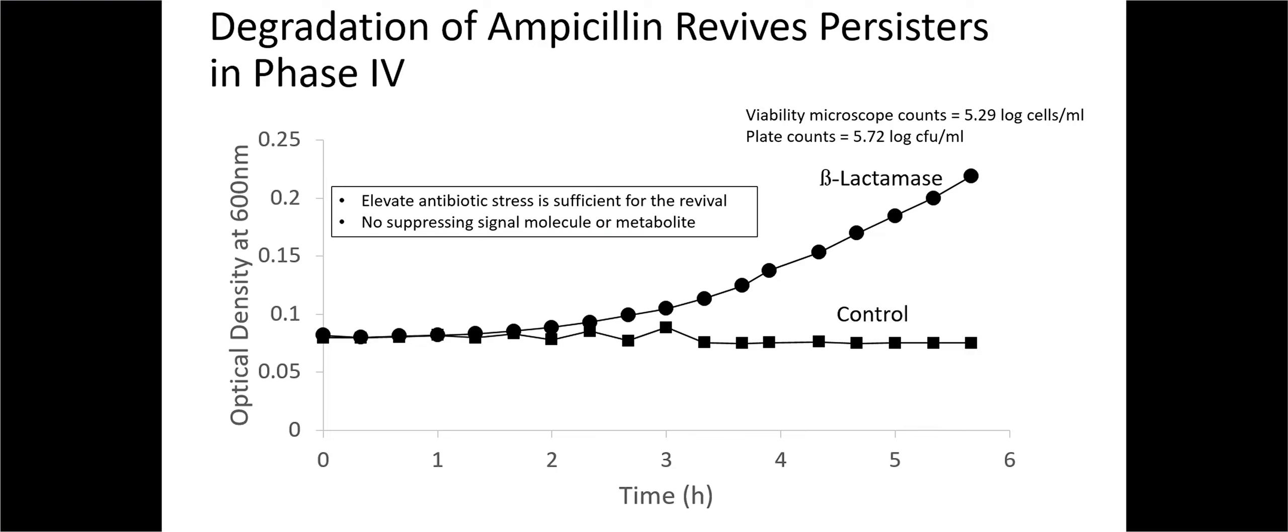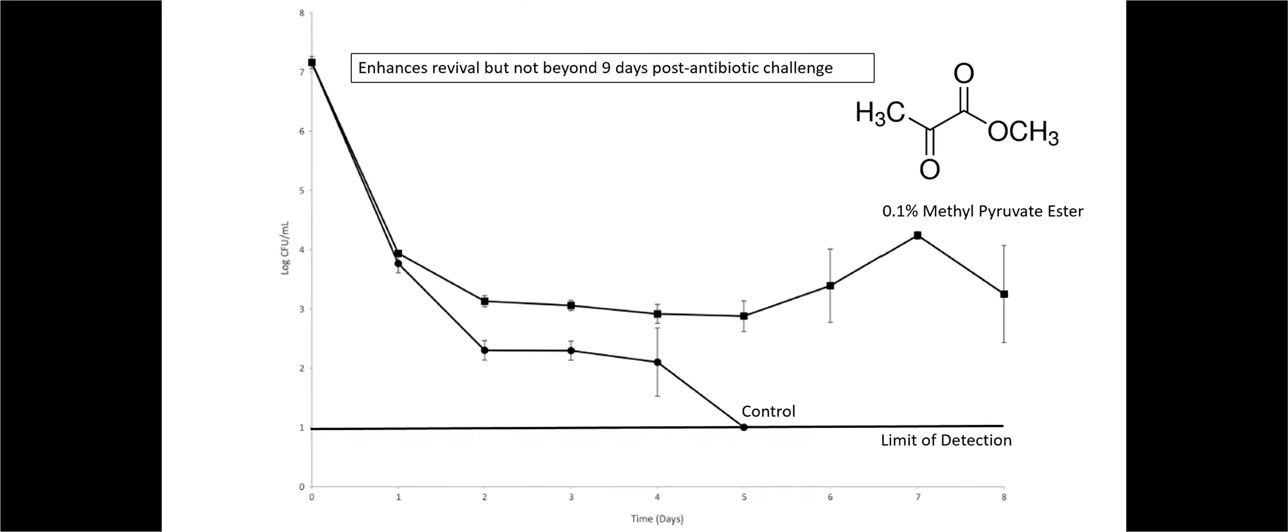But what about revival? Revival of persisters, really, you can just take them out of the antibiotic stress, no problem. You'll get them to grow. What we did is literally got a persister population in the phase four, that's about 40 hours into exposure. We just had beta-lactamase to degrade the antibiotic, and sure enough, they grew. This disproved the point about there's a special signal molecule suppressing the growth of persisters. Because if it was there, just adding an enzyme to degrade it wouldn't be sufficient. Once you relieve the antibiotic stress, that's good.